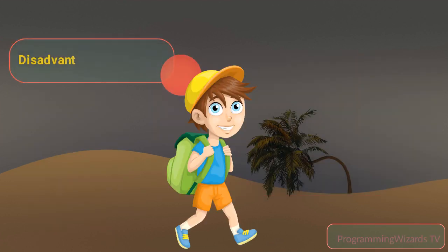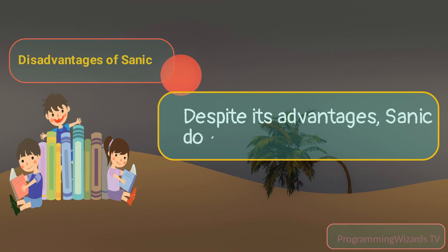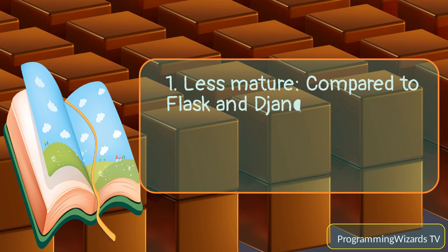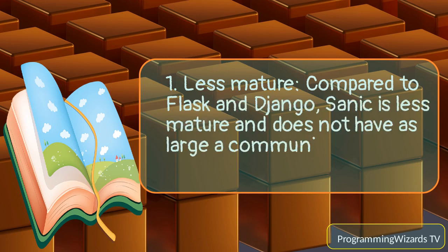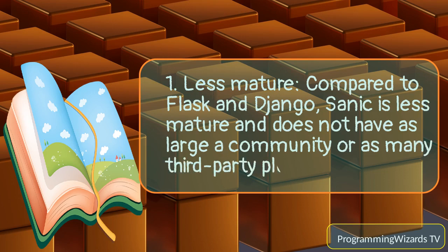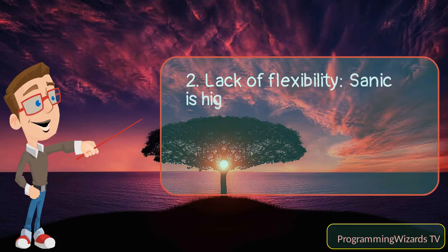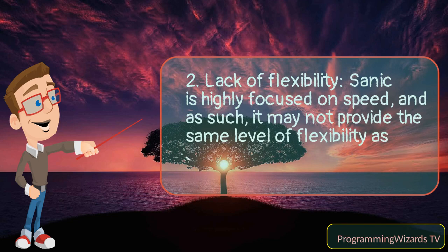Disadvantages of Sanic. Despite its advantages, Sanic does have a few limitations. 1. Less mature — compared to Flask and Django, Sanic is less mature and does not have as large a community or as many third-party plugins. 2. Lack of flexibility — Sanic is highly focused on speed and as such, it may not provide the same level of flexibility as other more mature Python web frameworks.